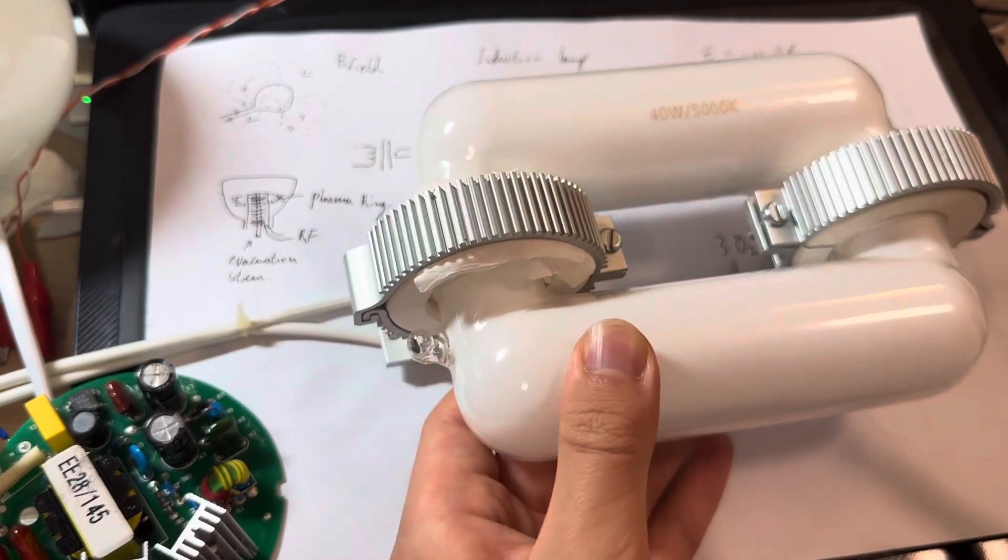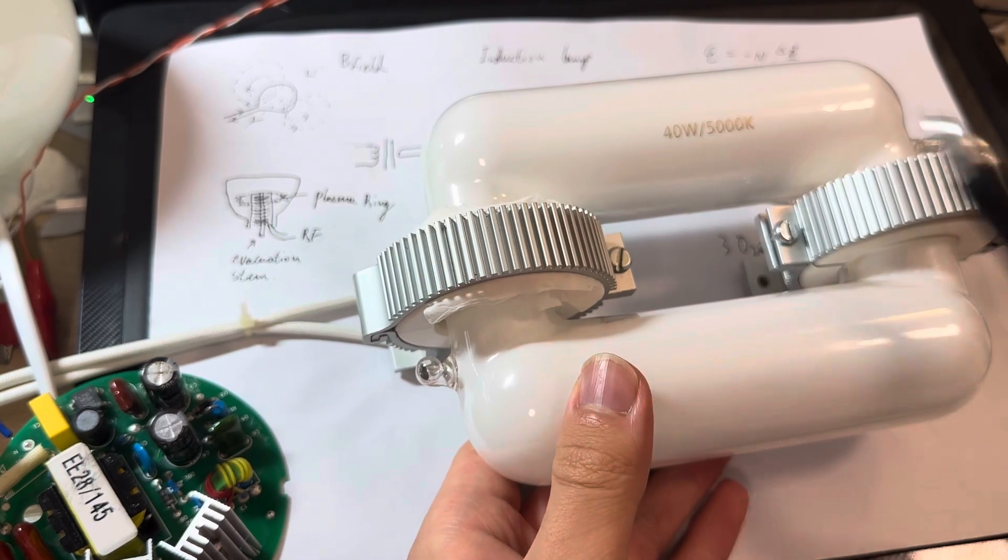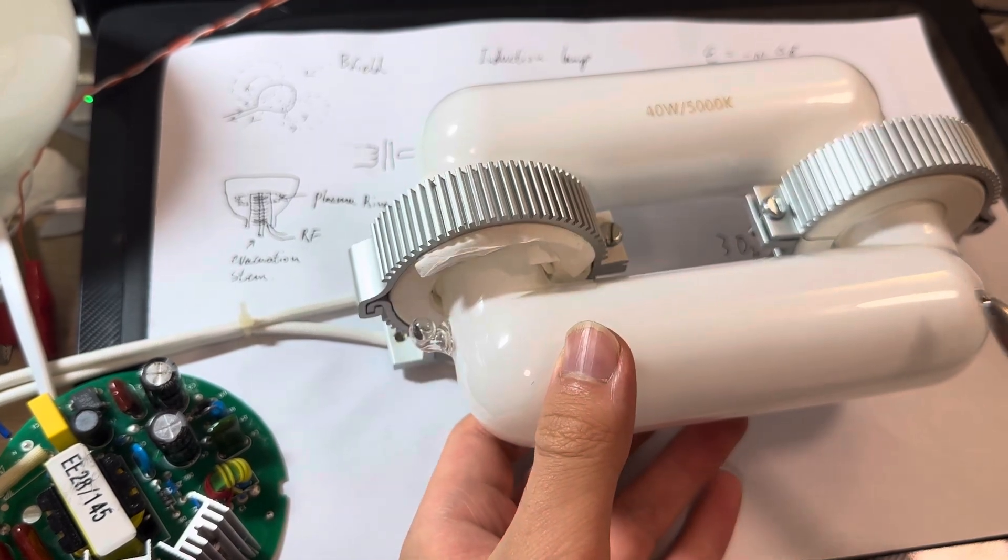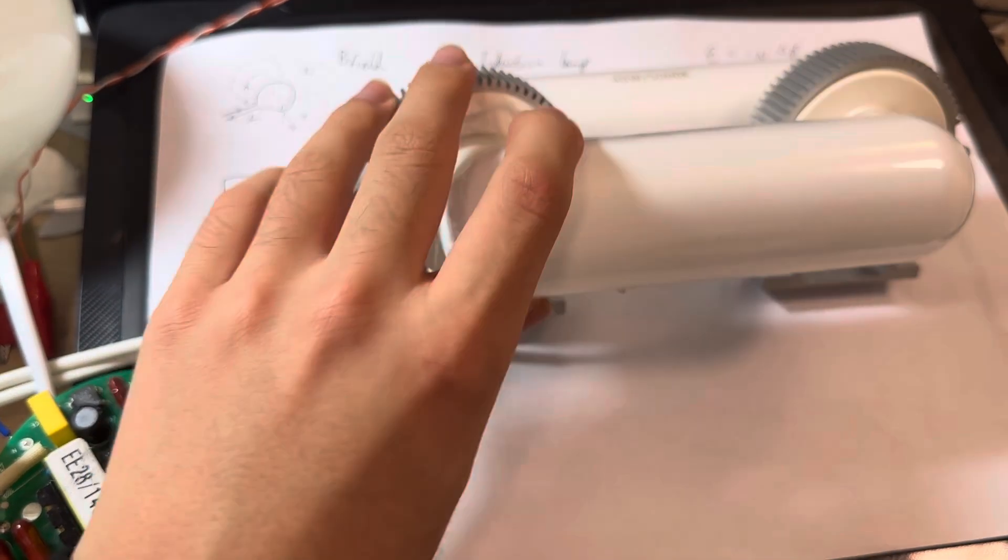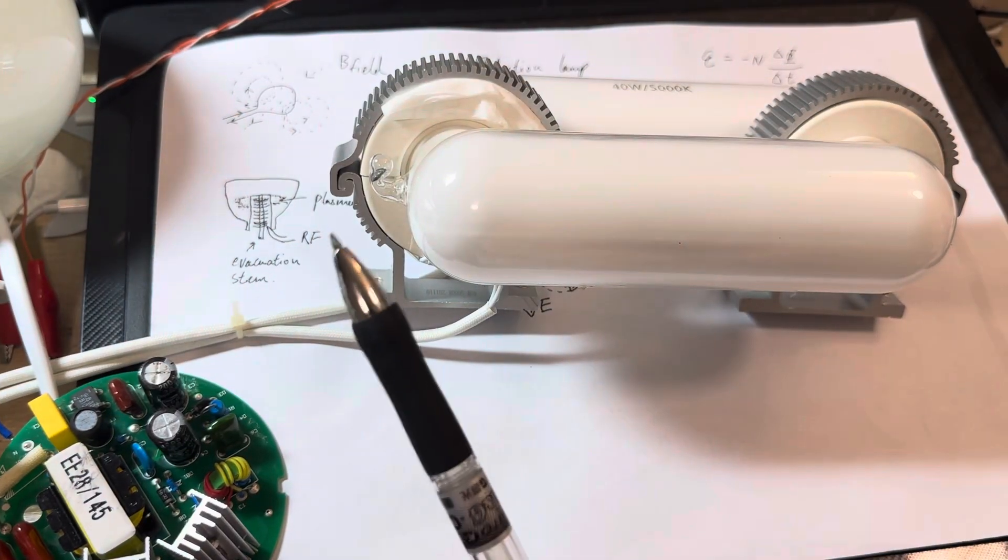Here, instead of one toroid, we have two toroids, the toroidal transformers. But the electric field adds up, so the winding has to be in certain directions to each other. They have to be in theory in phase.